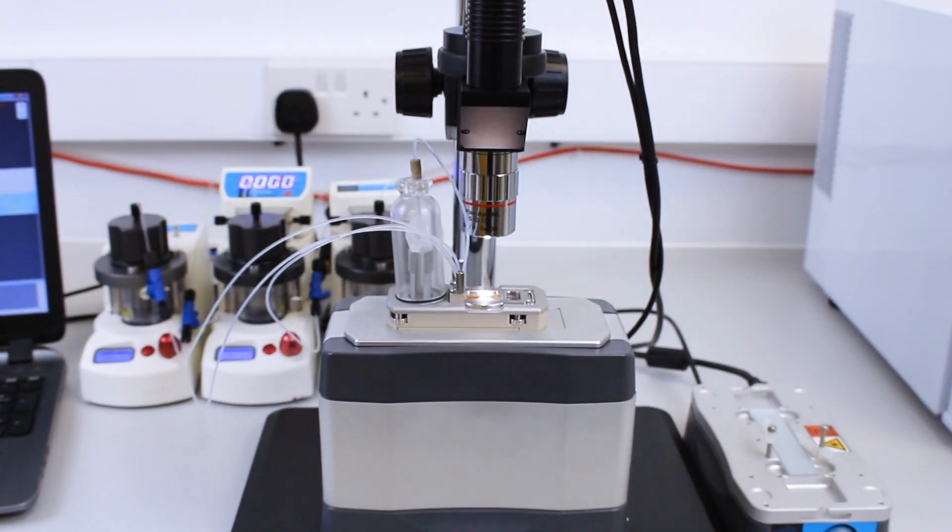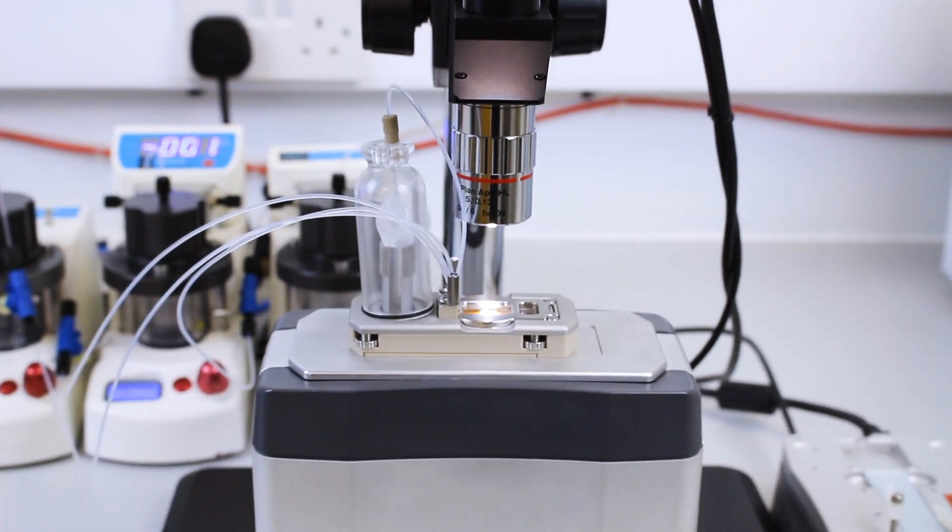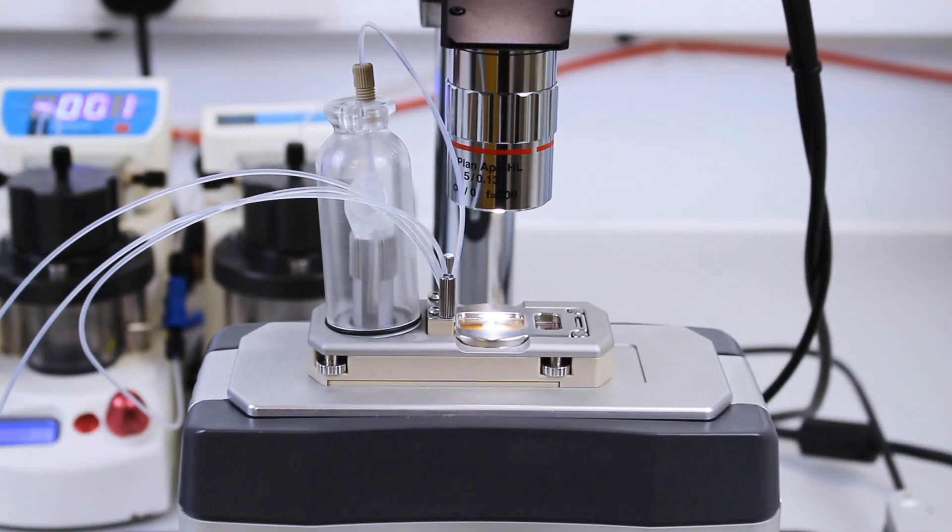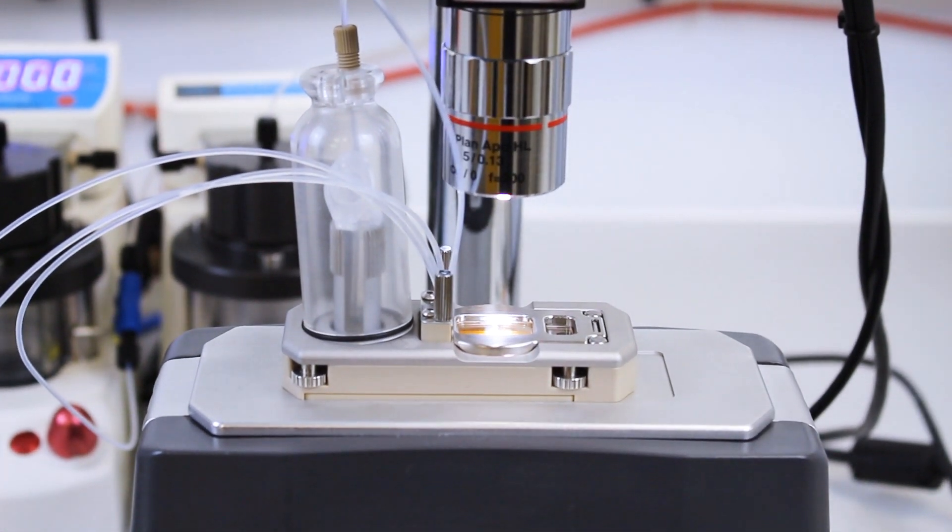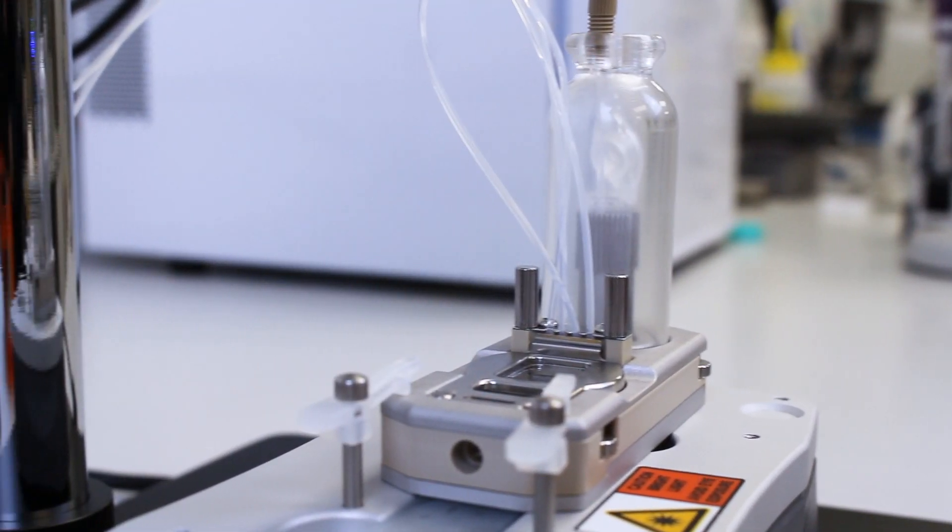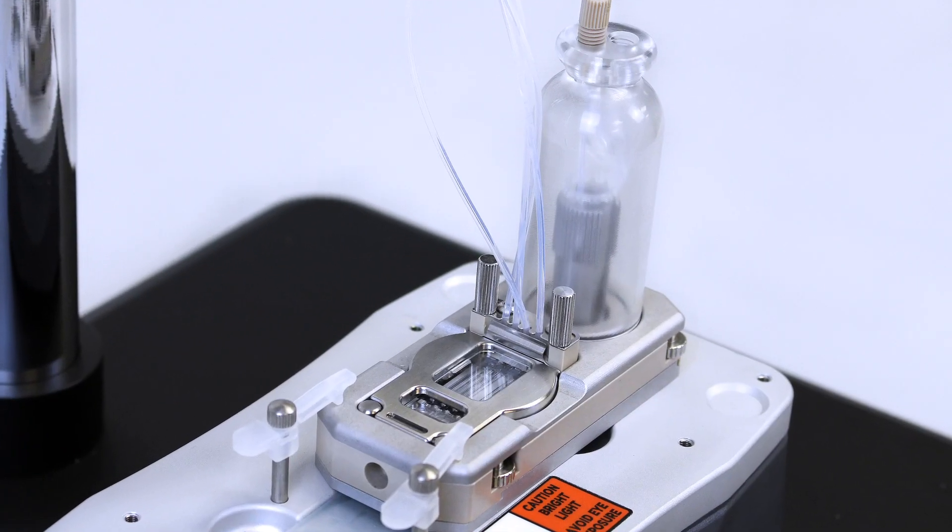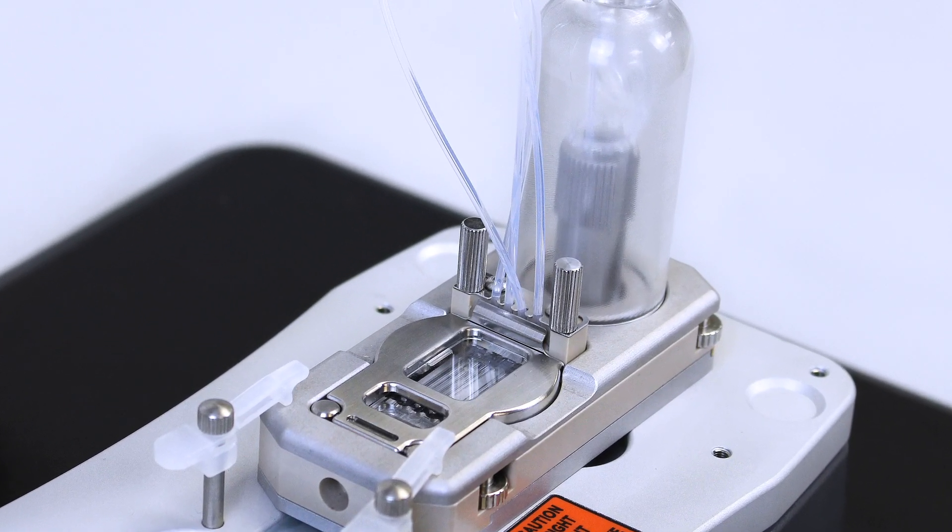The Microencapsulator 1 is an integrated microfluidic module from Dolomite designed specifically for droplet biology applications. The innovative design makes it simple and straightforward to individually encapsulate hundreds of thousands of single cells.